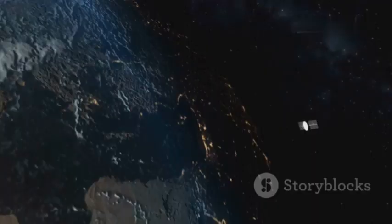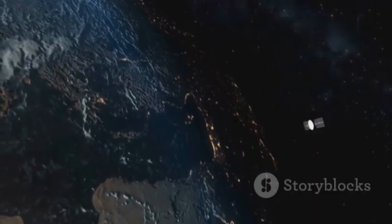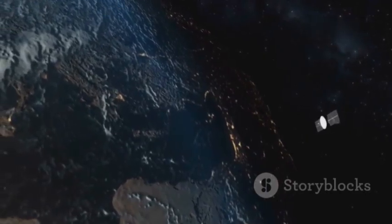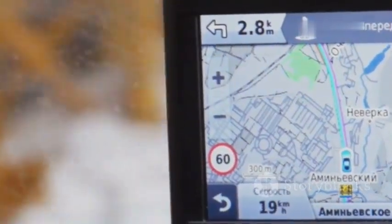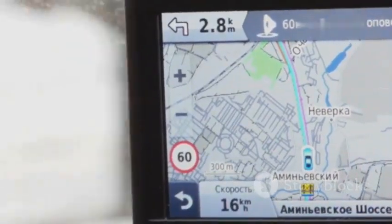Engineers have incorporated Einstein's equations into the GPS software, which constantly corrects for the time differences between the satellites and receivers on Earth. Without these corrections, GPS navigation would be wildly inaccurate.